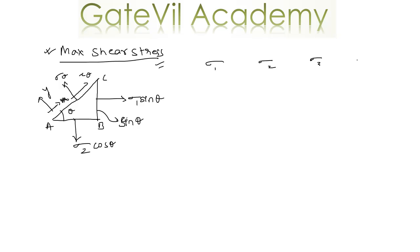For the first example, let's take sigma 1 as 4, sigma 2 as 2, and sigma 3 as 0. Keep in mind that the maximum shear stress is one half of the algebraic difference between the principal stresses. So for tau max we'll have 4 minus 0, divided by 2, which means tau max equals 2.